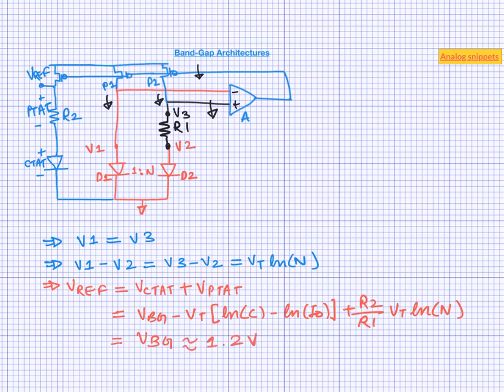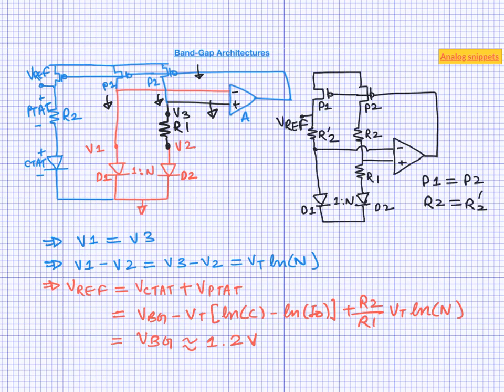We can generate this reference voltage in a slightly different way. Notice that diodes are already present in the two branches, so can we eliminate this third branch? Indeed we can, by placing R2 in those two branches instead. Here we have the same reference voltage with slightly fewer components.